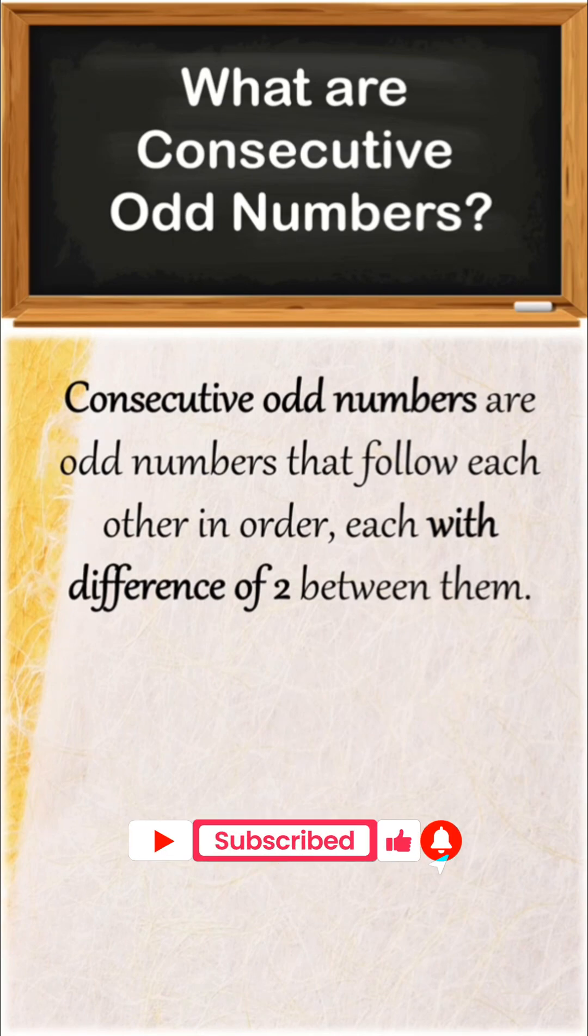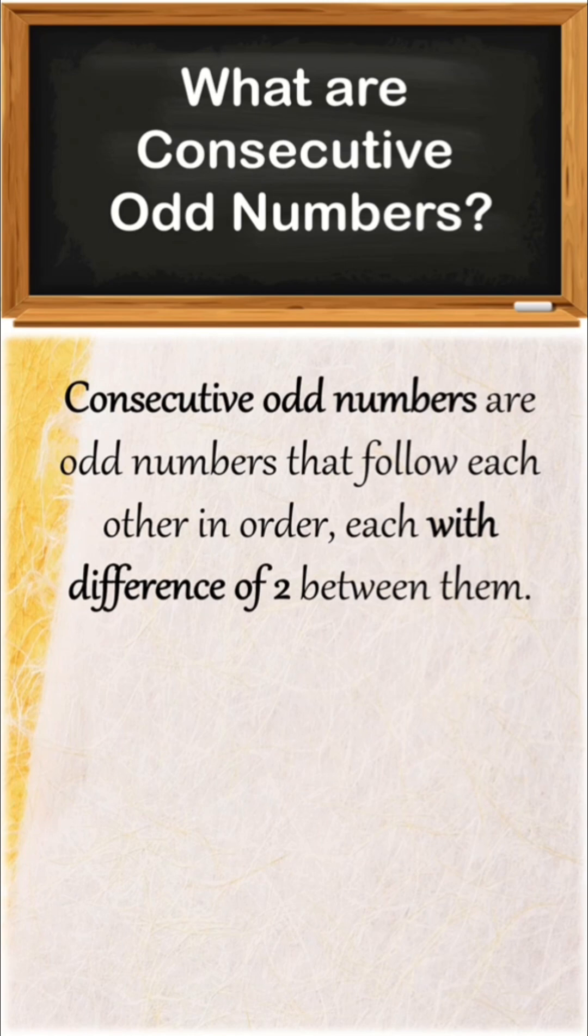When do you say a given set of odd numbers are consecutive odd numbers? If they maintain a sequence or common pattern without skipping any number in between.